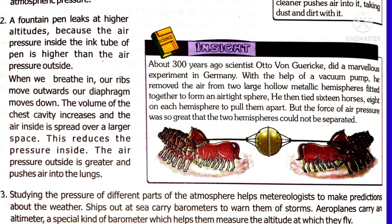When we breathe in, our ribs move outwards and our diaphragm moves downwards. The volume of the chest cavity increases and the air inside is spread over a large space, which reduces the pressure inside. Outside air pressure is greater and pushes air into the lungs. Ships at sea carry barometers to know the air pressure of the surrounding atmosphere. Aeroplanes also use a barometer to measure the altitude at which they are flying — such a barometer is called an altimeter.